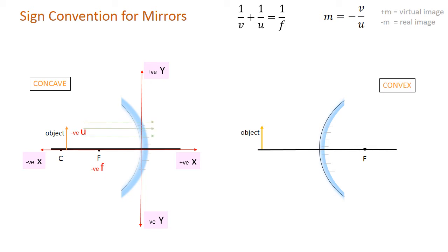So in this case our object gets a minus U sign and the focal length also gets a minus F sign. The image gets a plus V or a minus V sign depending on where it is formed. Similarly, for a convex mirror we draw the axis along the pole.